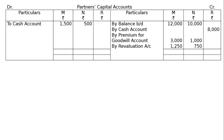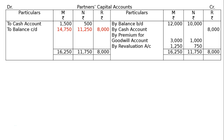Next, totalling: M and N will draw half of the goodwill in cash — M's capital account and N's capital account are debited to cash account. It is half of the goodwill amount they received, that is Rs. 1,500 for M and Rs. 500 for N. After totalling both sides, the balance carried down is: M — Rs. 14,750; N — Rs. 11,250; and R — Rs. 8,000.